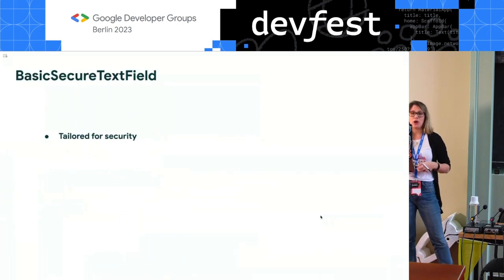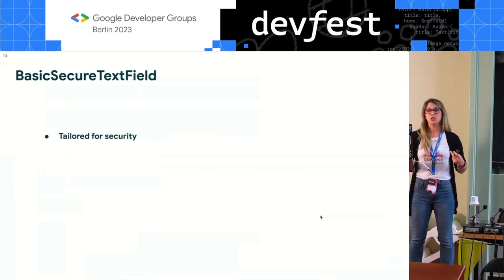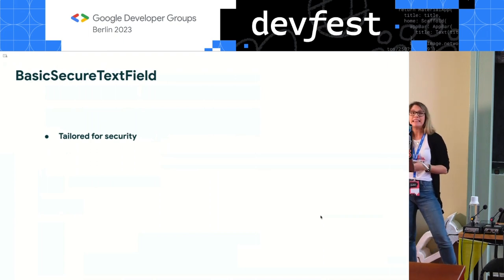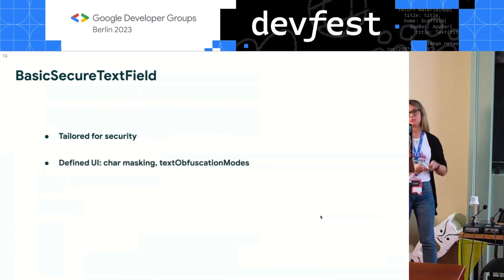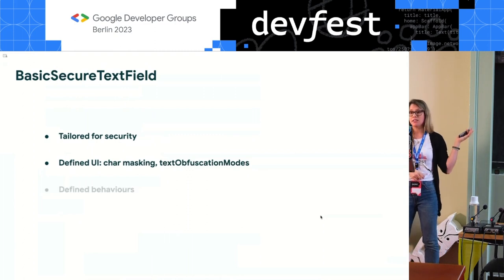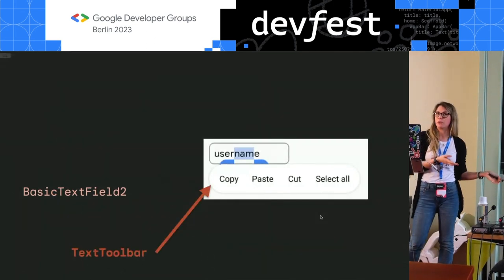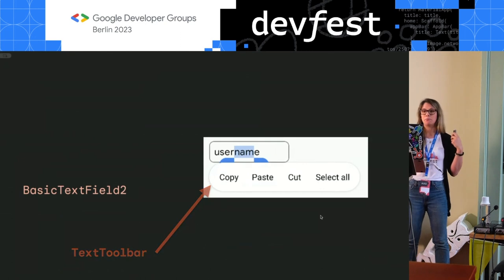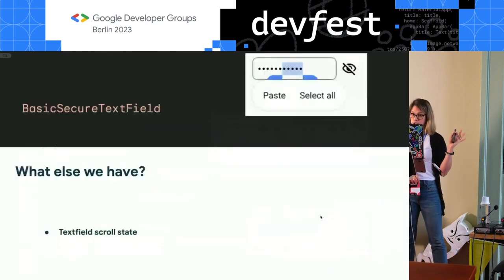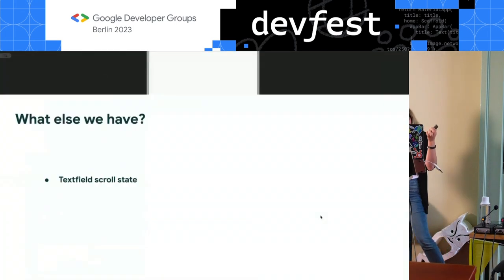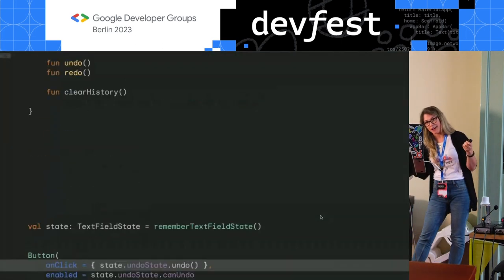BasicSecureTextField also allows the team, having a completely different component on top of basic text field, to do optimizations on memory — preventing things like memory spoofing by clearing the state when it's no longer necessary. Try masking and some defined behaviors, like altering the text toolbar: for a normal text field you can copy and cut, but for BasicSecureTextField you wouldn't be able to copy and cut. In the interest of time, we covered a lot of things: managing state, input transformation, output transformation. There is a lot I couldn't cover on the new API.